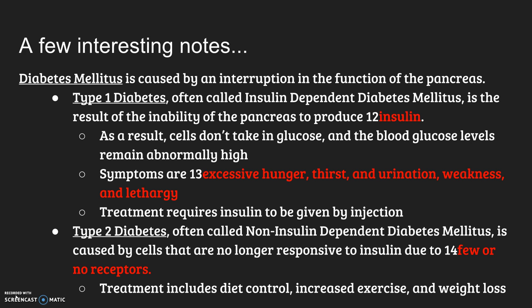Then there's Type 2 diabetes, often called adult-onset diabetes or non-insulin-dependent diabetes mellitus. This is caused by cells that are no longer responsive to insulin due to few or no receptors. Your body makes insulin, but the cells don't have the receptors to receive it, so those cells aren't able to take in glucose from your blood either. Treatment does not need insulin injections because you already make insulin. Instead, treatment includes diet control, limiting glucose intake, increasing exercise, and a goal of weight loss to get back under the target weight for your overall age and size.